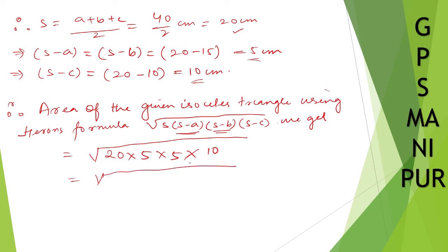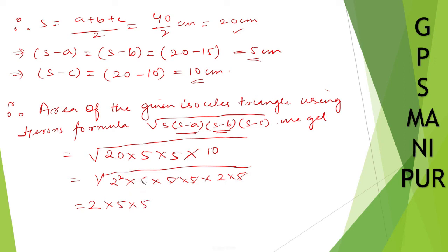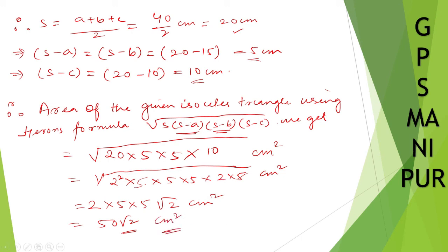We can write 20 as 4 times 5, which is 2 squared times 5. Then we have times 5 times 5, and 10 as 2 times 5. Taking pairs out of the square root: 2 squared gives one 2, and 5 squared gives one 5, leaving another 5 times 2 inside, which gives root 2. So the area is 50 root 2 centimeters squared.